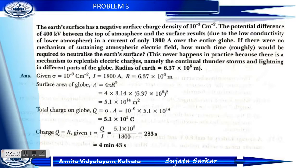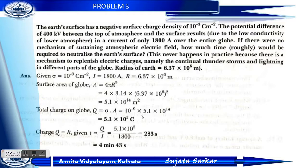Total charge Q equals sigma into A. Sigma equals 10 to the power minus 9 and area equals 5.1 into 10 to the power 14, so after calculating we get Q equals 5.1 into 10 to the power 5 coulomb.